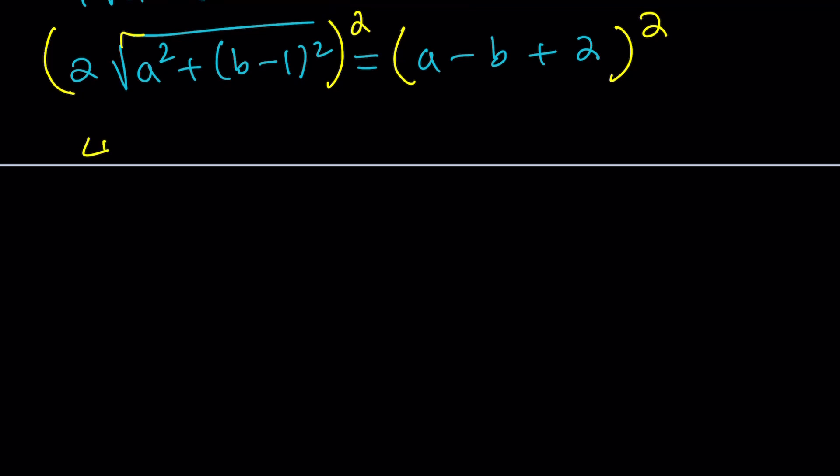So we're going to get 4 times A squared plus B minus 1 squared equals this. Now, how do you square something like this? You could use the formula X plus Y plus Z squared or you could treat this as a single term like squared first. That's going to be A squared minus 2AB plus B squared. And then square the next term, which is 4. And then just multiply their product and, I mean, multiply them and double the answer. Multiply their product. Okay, so weird.